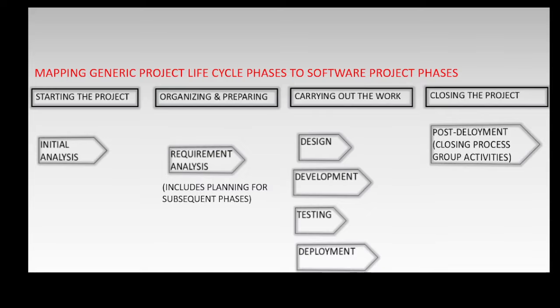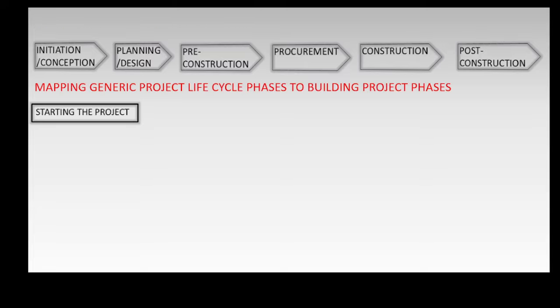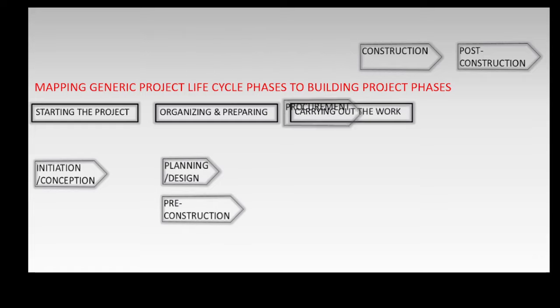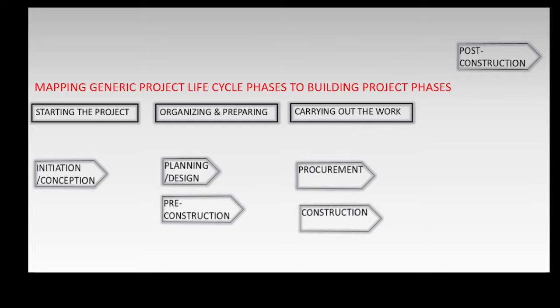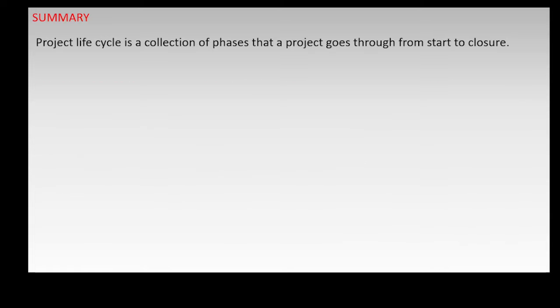Likewise, the specific phases of a building project are: initiation/conception, planning and design, pre-construction, procurement, construction, and post-construction. The mapping between the generic project life cycle phases and the specific phases of a building project are: starting the project is mapped to initiation/conception; organizing and preparing is mapped to planning, design, and pre-construction; carrying out the work is mapped to procurement and construction; and closing the project is mapped to post-construction.